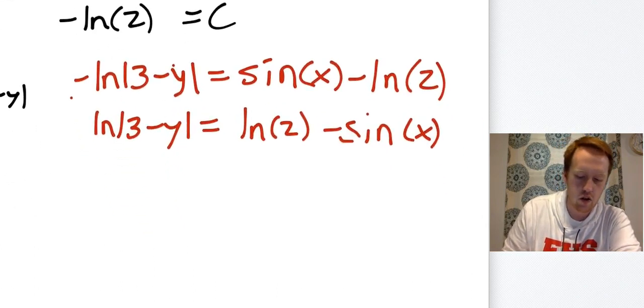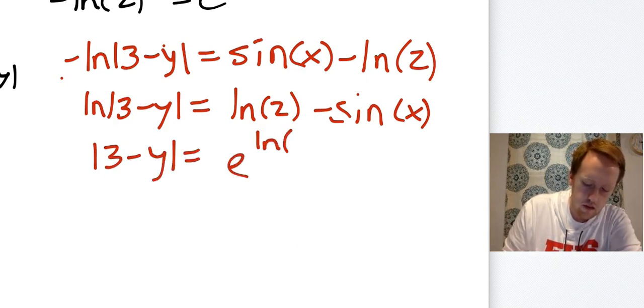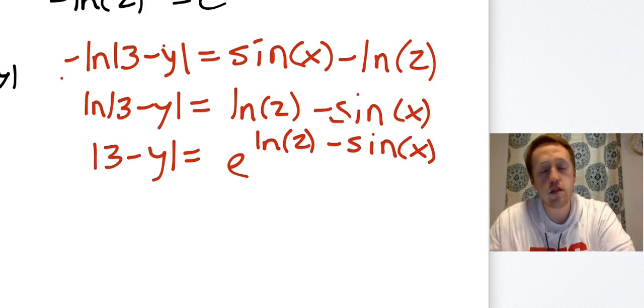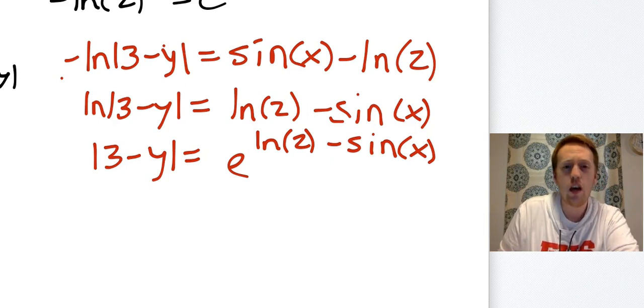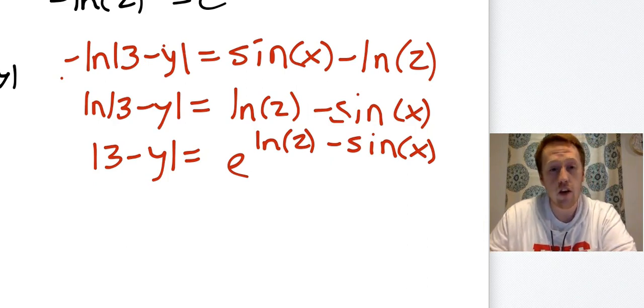Now I'm going to get rid of the natural log on the left-hand side, so I'm going to e both sides. Okay. Now at this point you have options. If this is a multiple choice, you need to take care of the fact that this says e to the natural log of two. I'm going to leave it for now and I'll go back and show you what you can do instead.